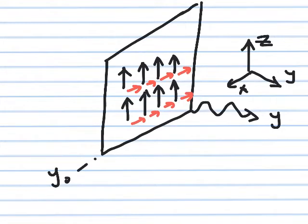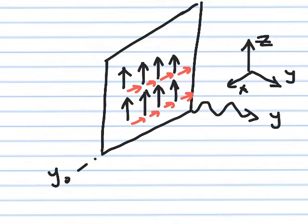Here I freeze time — just taking a snapshot — and focus on the plane y = y_naught. The magnetic field is the same everywhere on this plane and points in the z-direction. The wave itself is traveling in the y-direction, so the magnetic field is in z while the wave propagates in y, and this is called a uniform plane wave because the field is the same everywhere along that plane.